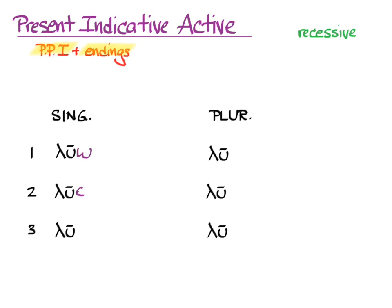So let's add them: ω, εις, ει, ομεν, ετε, ουσι, or ουσιν. Now, we need to put in recessive accent.